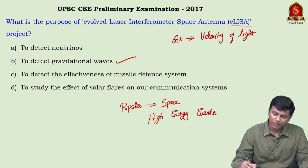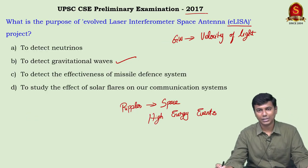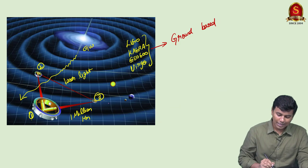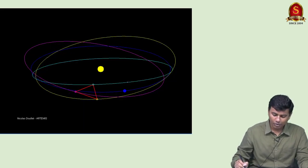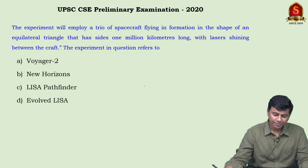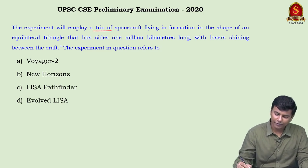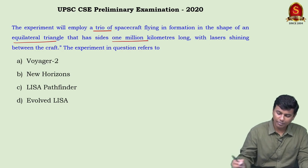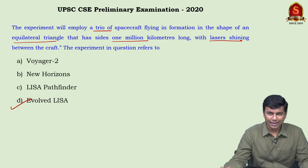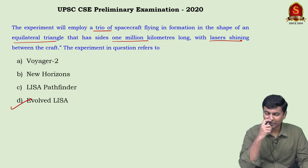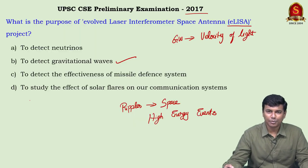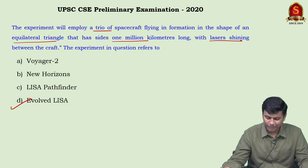Interestingly, ELISA was asked in 2017 and again in 2020 in a different form. The 2020 question described 'a trio of spacecraft flying in formation of an equilateral triangle separated by one million kilometers with laser shining between them' — this is the ELISA experiment. Answer: D. This shows the importance of revising old question papers, as UPSC repeated the ELISA concept across years.